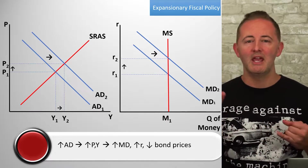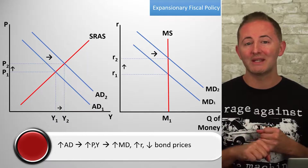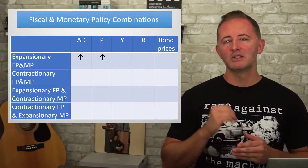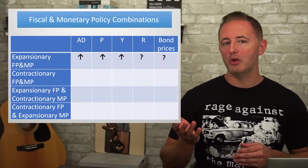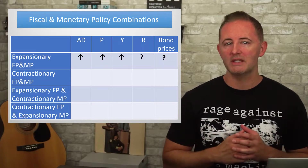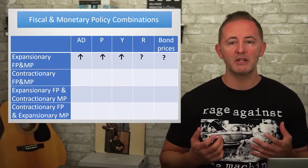Here's the takeaway: expansionary policies move interest rates in opposite directions. So if policymakers want to increase output without having much effect on interest rates, they should make both policies expansionary.